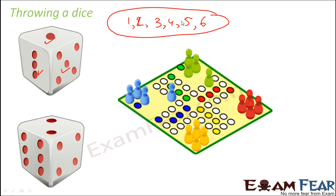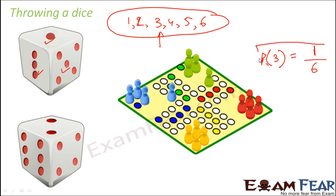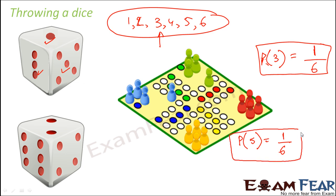If I ask you: what is the probability of getting a three when you throw a dice? The total number of possibilities when we throw a dice is six, and the favorable outcomes of getting a three is just one. So the probability of getting a three is one by six. Similarly, the probability of getting a five is also one out of six. So the probability of getting either of these numbers is one out of six.